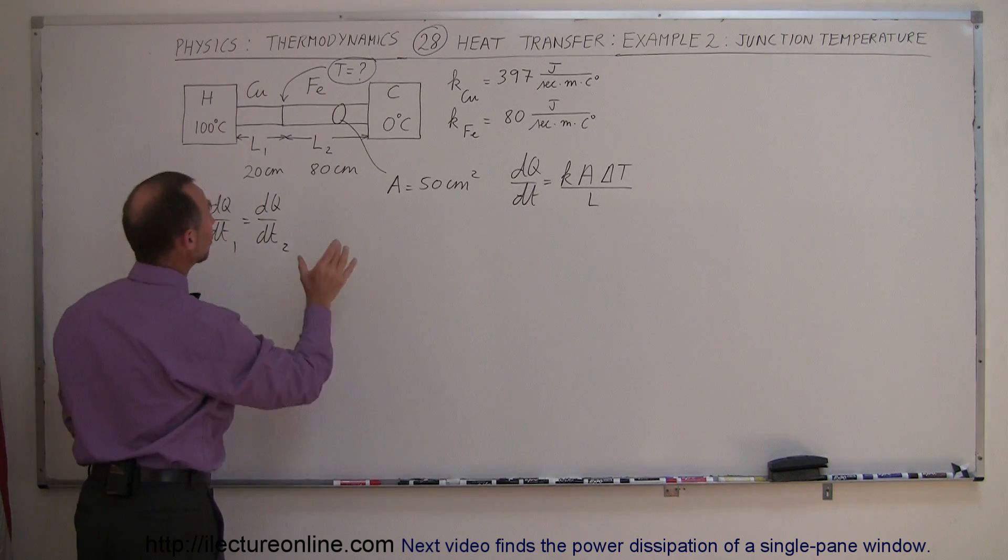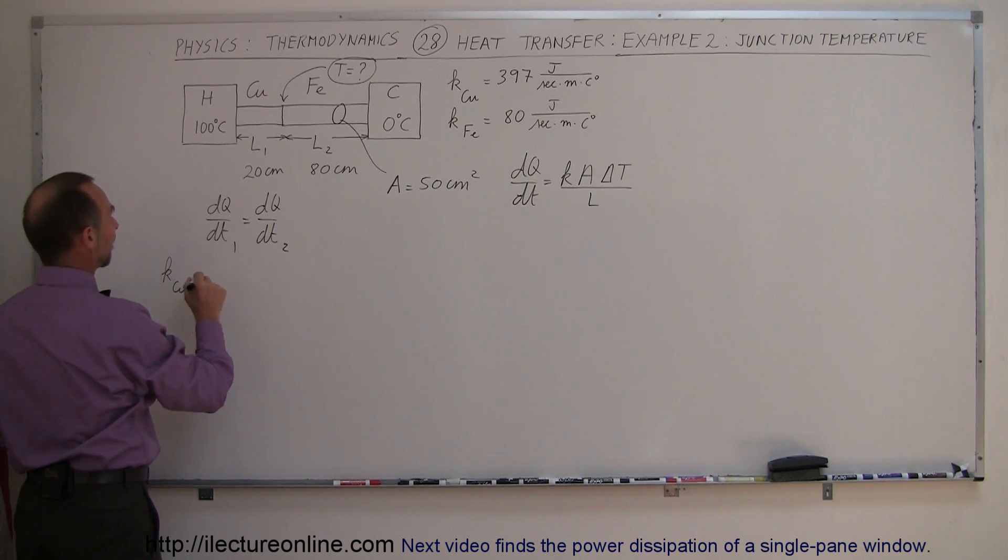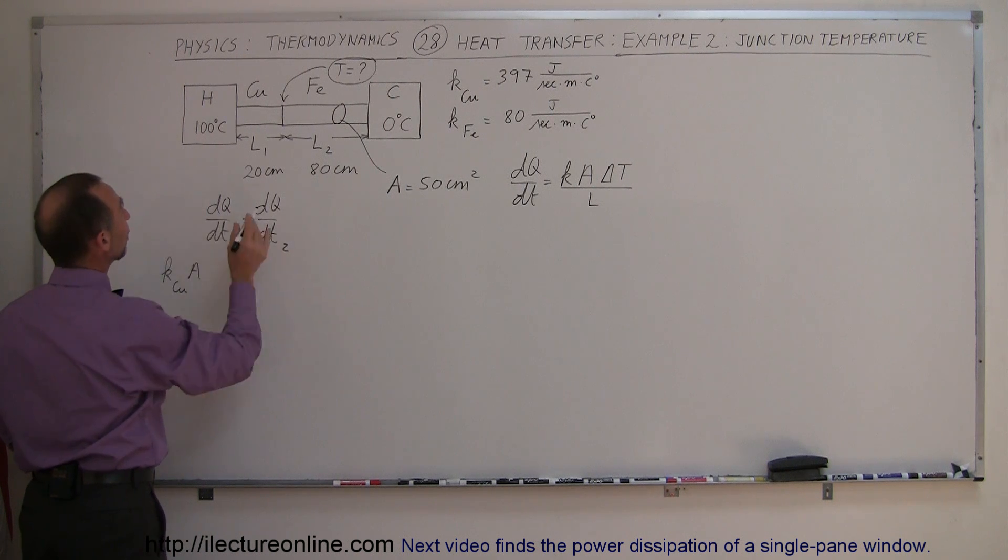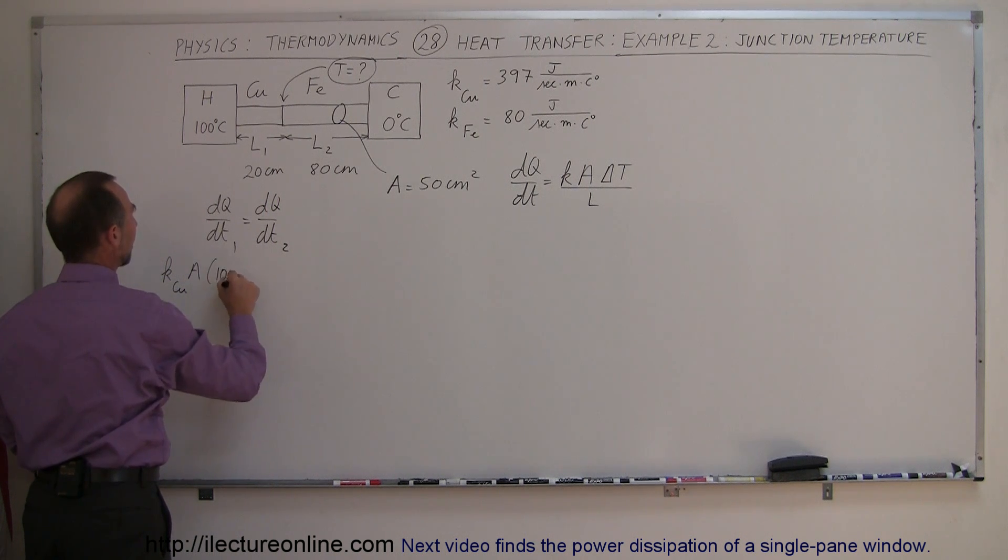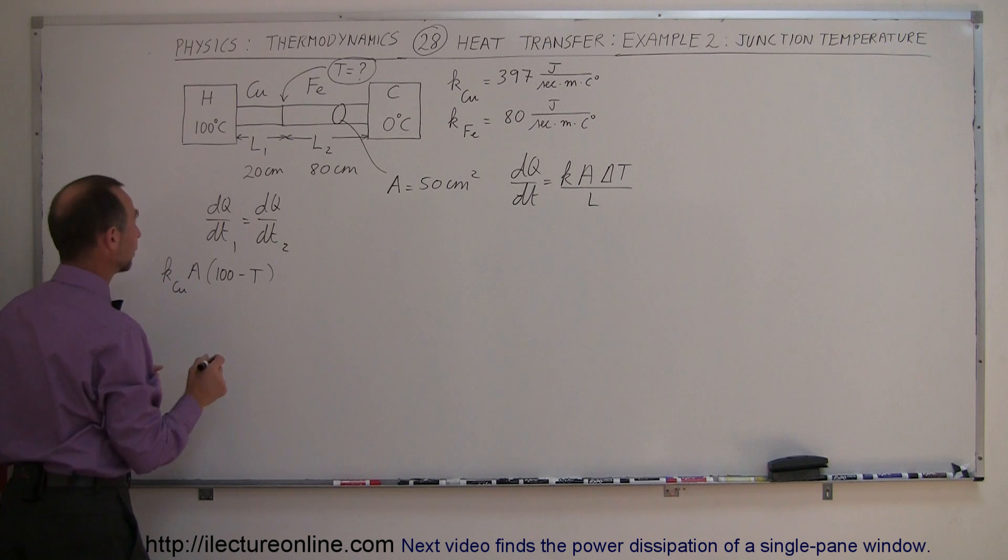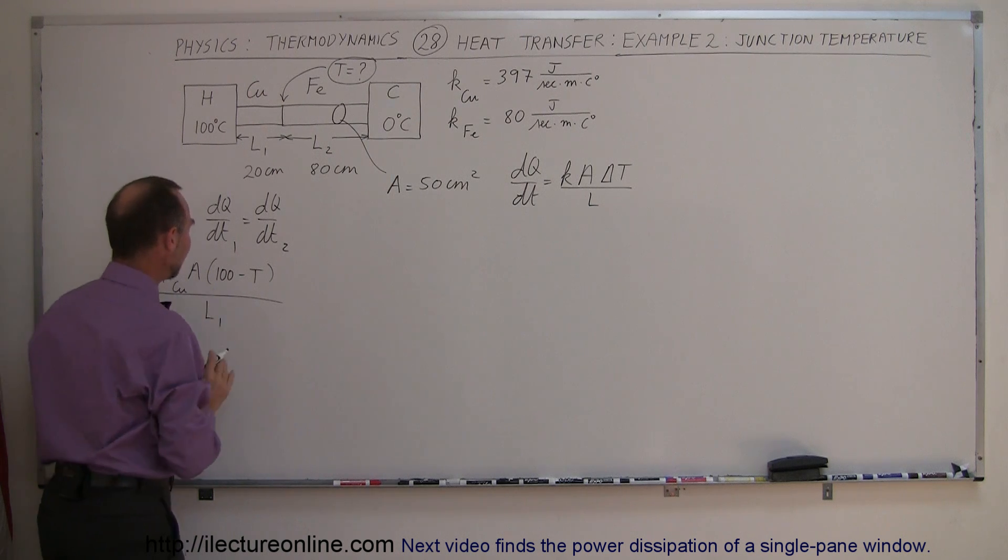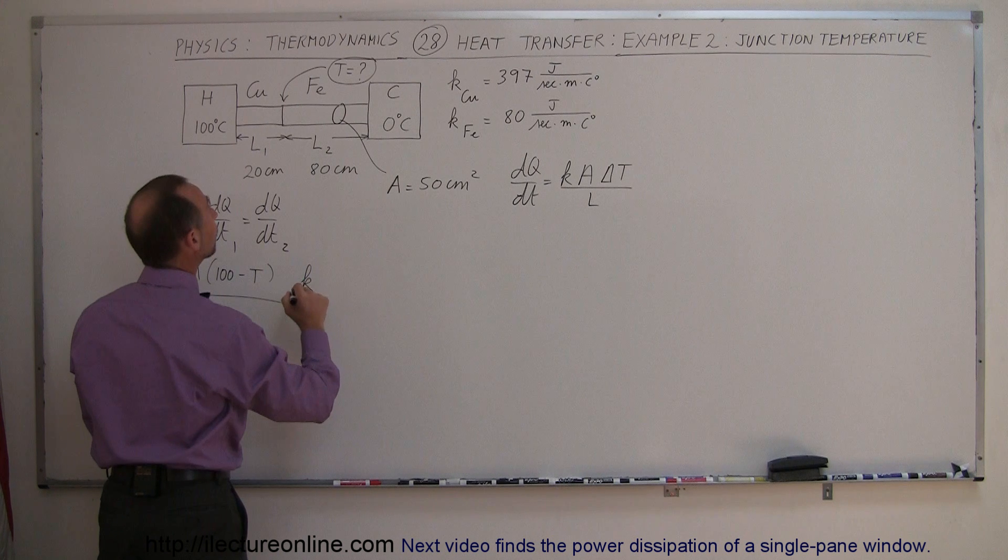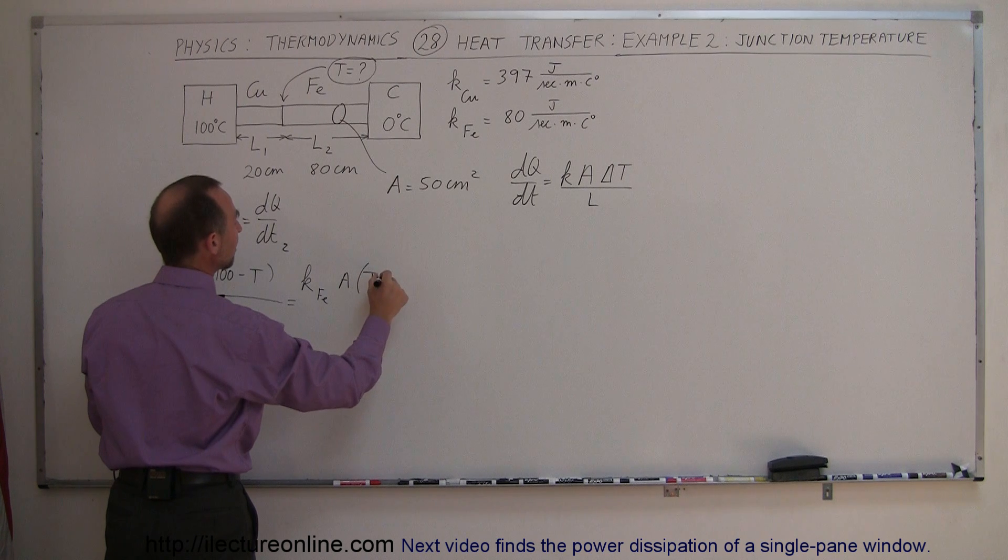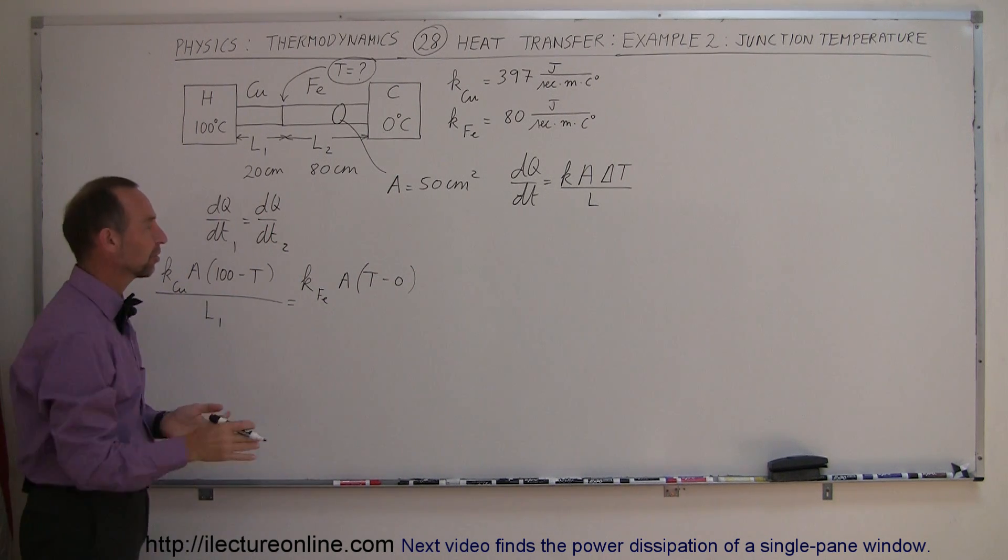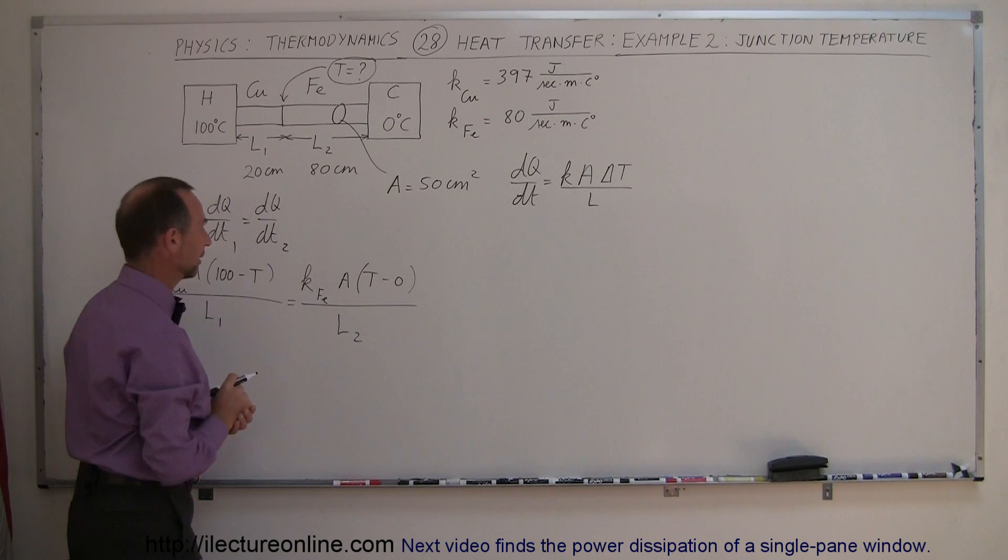What we can do then is say that the dQ/dt is the same in both sections. On the left, we have K for copper, the cross-sectional area, and the difference in temperature. That will be from 100 to whatever the temperature is there, so we'll write 100 minus T. T is going to be smaller than 100. We divide that by the length L1. To the right, this will be the K of the iron, times the cross-sectional area, times T minus zero, divided by the length of the iron bar.